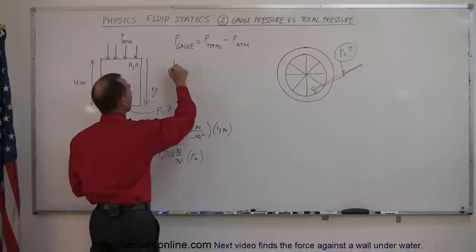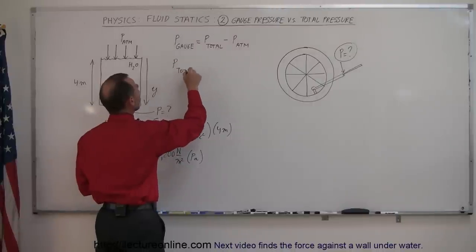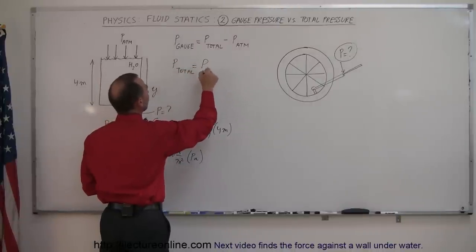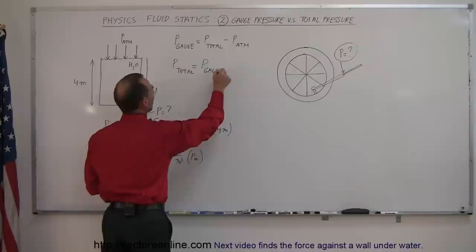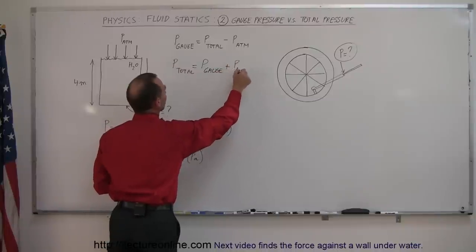So, if we want to find total pressure, P total, that is equal to the sum of the gauge pressure plus the atmospheric pressure.